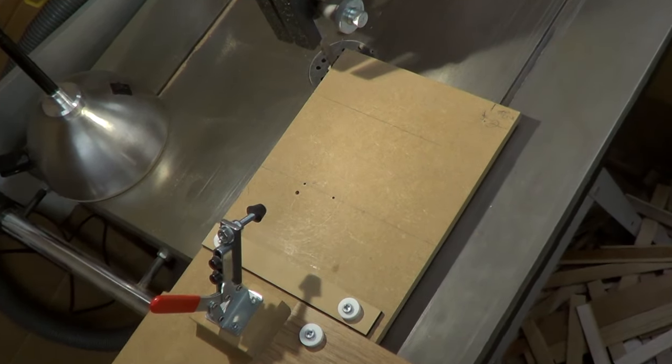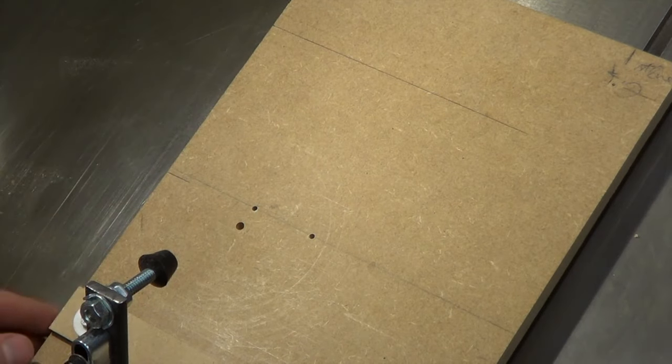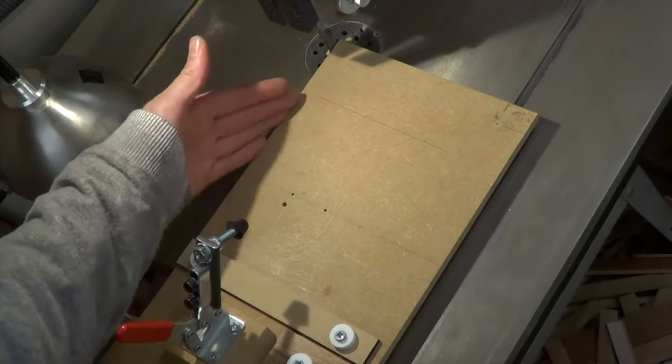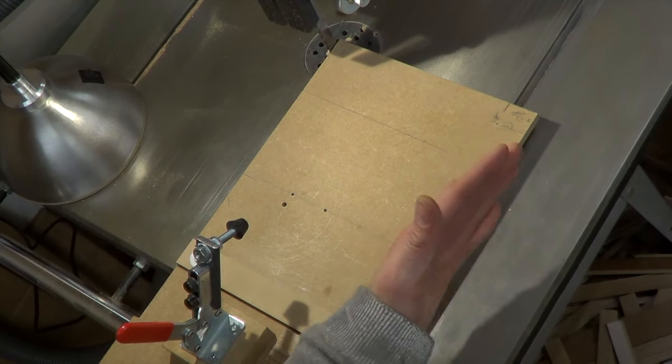I then cut on the machine itself this edge so I know that this edge is exactly parallel to the slots in the cast iron table.